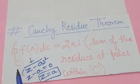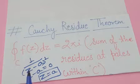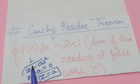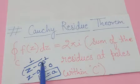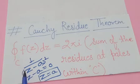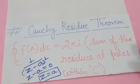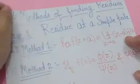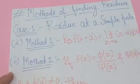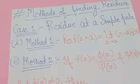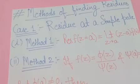We will discuss the residue formula for a pole of order n, where n can be two, three, four, or any value. That is the method to find the pole. Now let's see how to find the residues corresponding to those poles. There are different formulas for finding residues. First, let's learn to find residue for a simple pole.